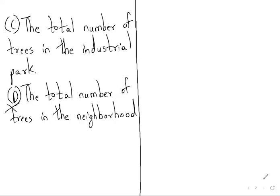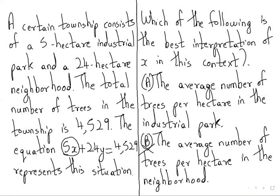Because if x were the total number of trees in the industrial park, it would become a much bigger number. That's why it has to be Option A: the average number of trees per hectare in the industrial park.